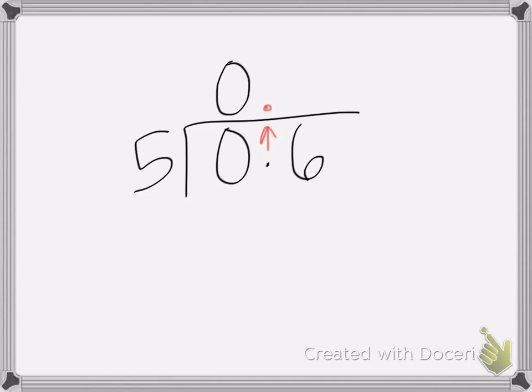I'm going to go ahead and put my 0 in there because 5 cannot go into 0. So then we think, 5 goes into 6 how many times? Goes in once, that's 5.